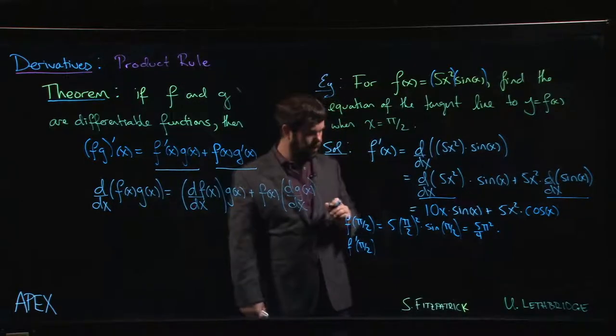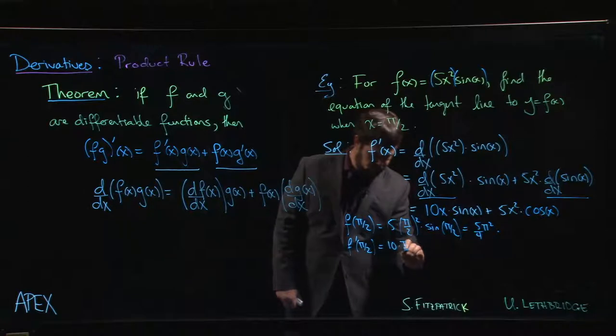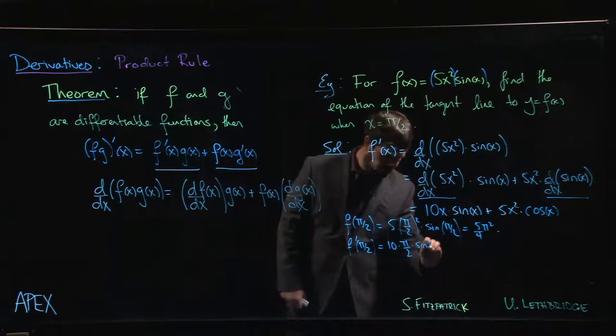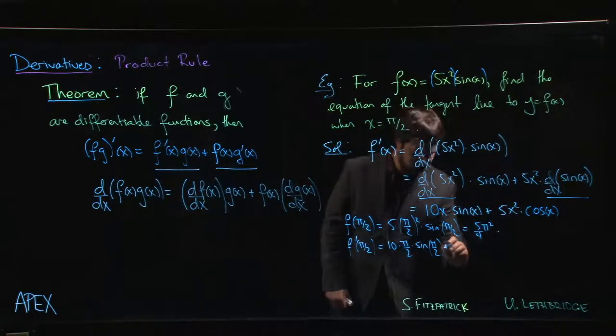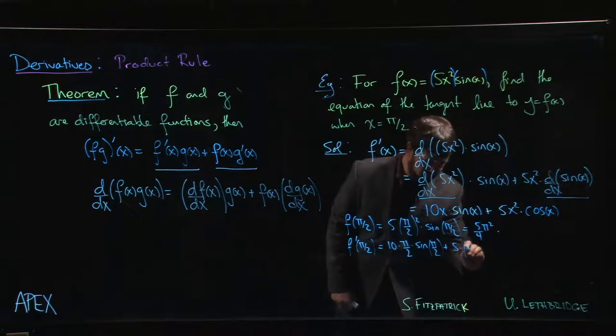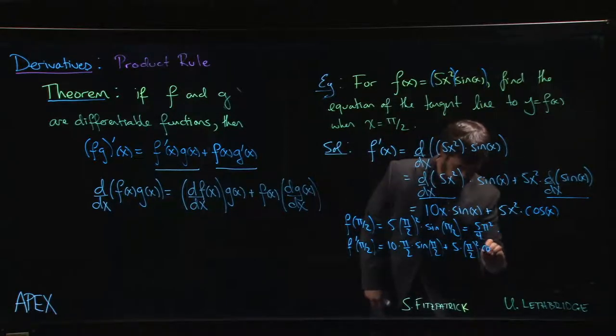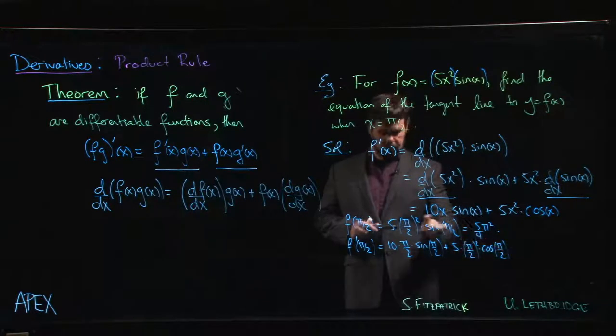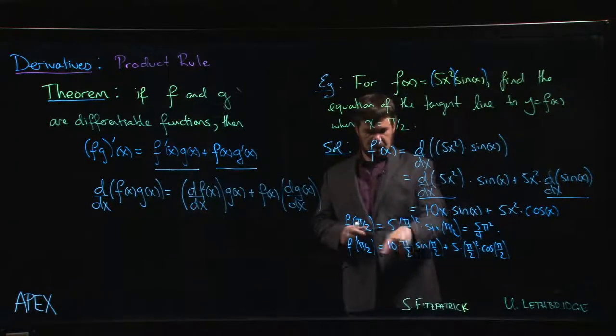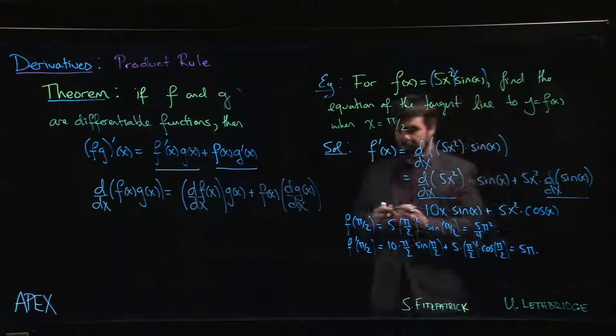F prime at pi over 2. We have 10 times we put the pi over 2 in here. Pi over 2 times sine of pi over 2. But there's a second term. 5 times pi over 2 squared times cosine of pi over 2. But cosine of pi over 2 is 0. Sine of pi over 2 is 1. So this term is gone. Here we have 1, 10 times pi over 2. This comes out to be 5 pi as the value of the derivative.